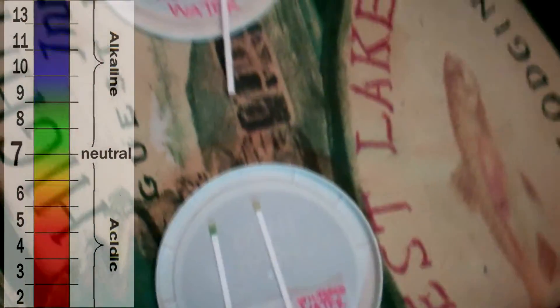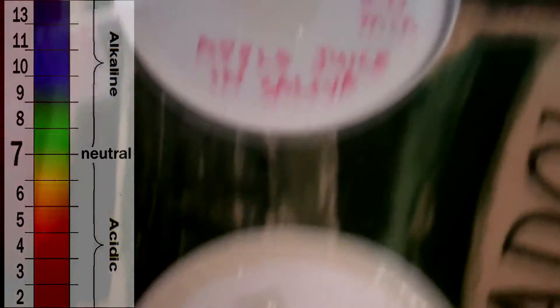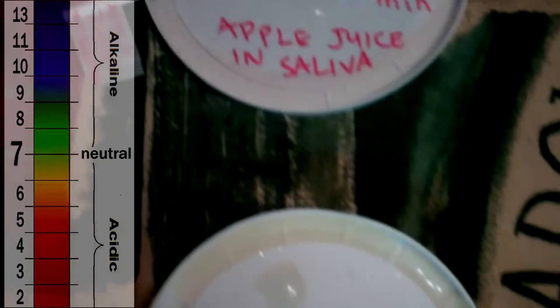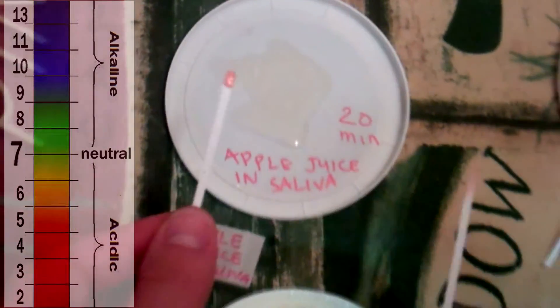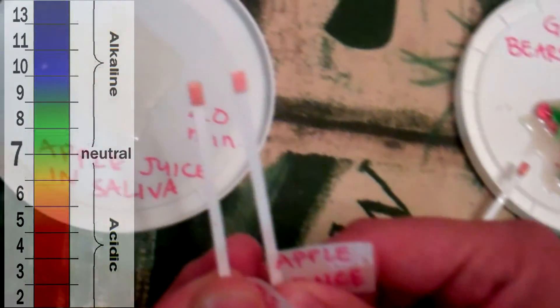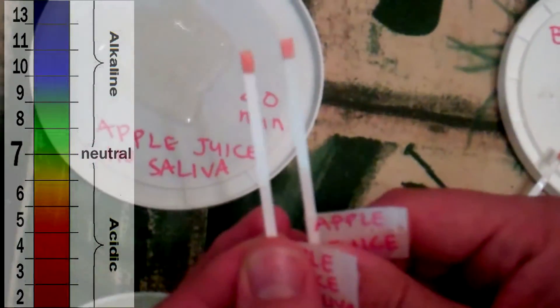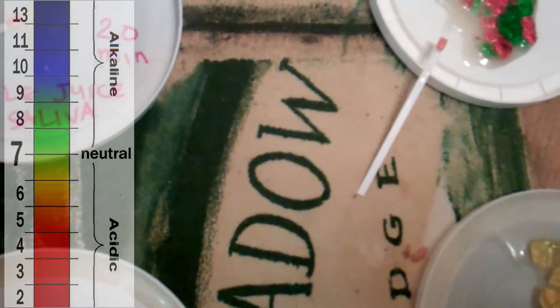And then we took that and over here we have apple juice in saliva. We have straight apple juice right here and apple juice in saliva. The apple juice in the saliva is pretty close. They are pretty close but you can see that it's actually a little bit darker than the apple juice itself. So it has caused a little bit more acidity when you put it in with the saliva. And that was testing it after 20 minutes.